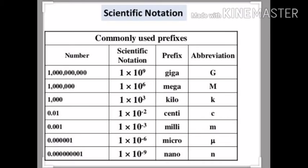Next is the topic of prefixes. We use common prefixes in scientific notation. A prefix refers to the basic unit of measurement. For example, the basic unit of mass is the kilogram, and prefixes help us express multiples or fractions of that unit.